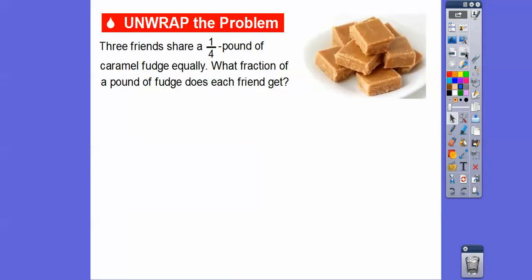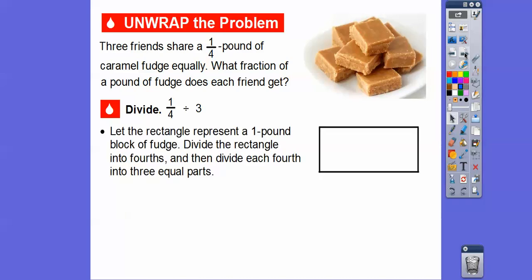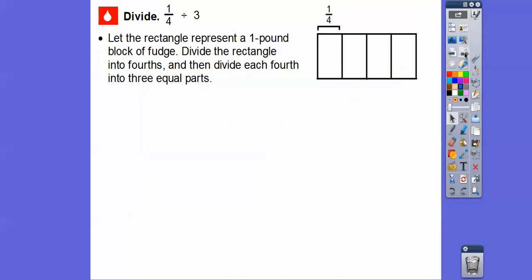Three friends share one-fourth of a pound of caramel fudge. What fraction of a pound of fudge does each friend get? We're going to divide one-fourth of a pound among those three friends. So we'll let this rectangle represent a whole pound of fudge, and we're going to first divide that rectangle into fourths — focusing on this one-fourth of a pound right here.